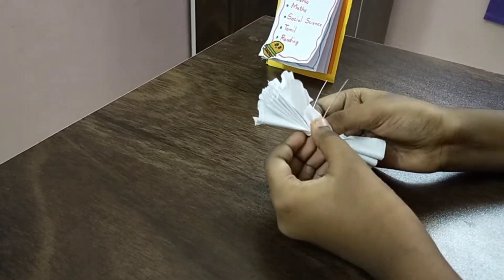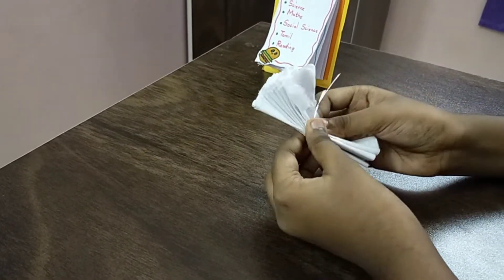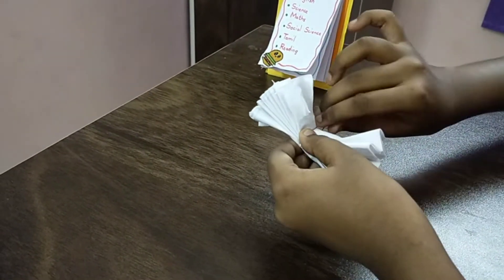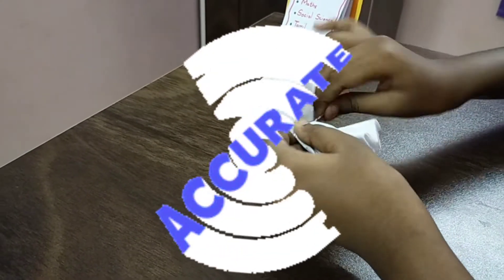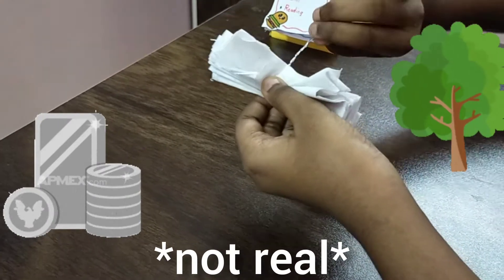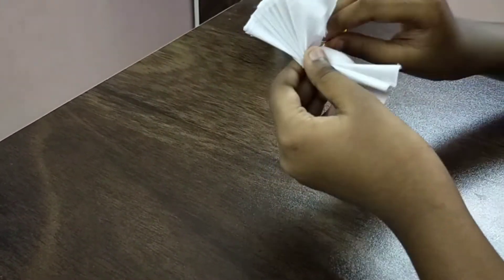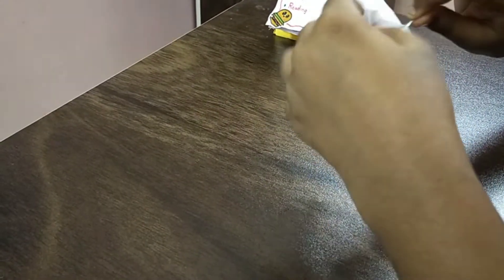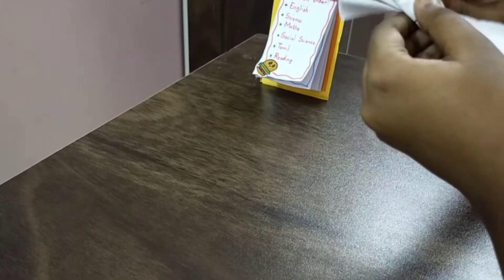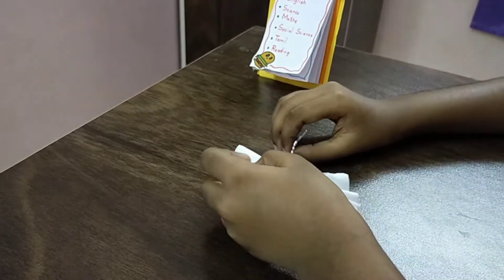Now I tie it using a craft wire like this. You just fold it in half over the folded tissue papers. And now I twist the wire like this to form like a stem, a silver stem. Be careful while twisting it because the ends are sharp.